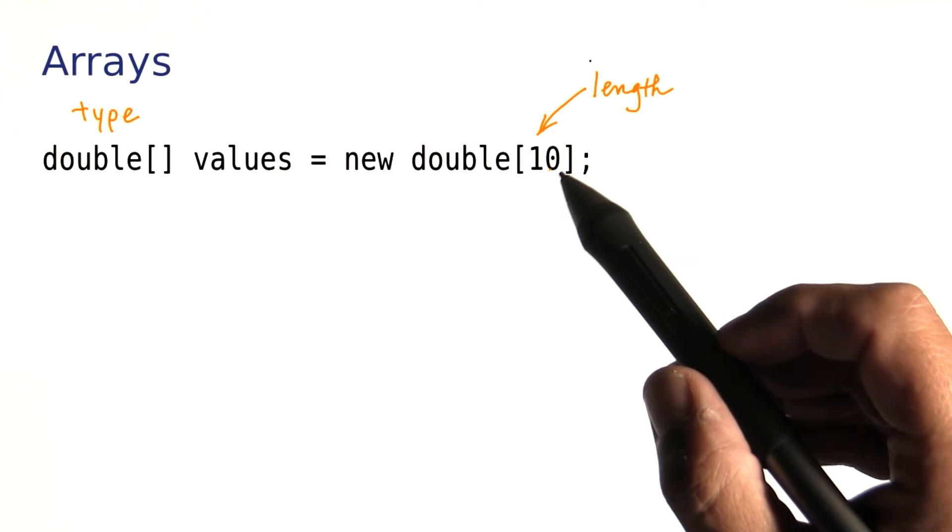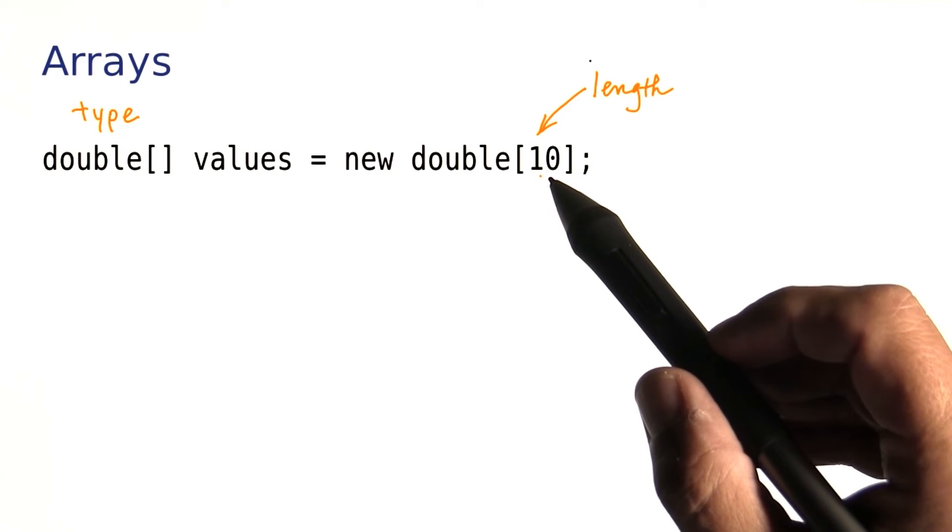Unlike with ArrayLists, the size of an array can never change. This array here has been made with 10 numbers, and it will always have 10 numbers in it. No more and no less.